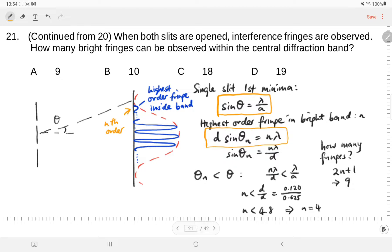So we come up with this inequality. We are saying that in order for you to see the nth order, it has to be not at or greater than, so it's less than the theta of the first order minima of the diffraction pattern. Combining these two in the inequality, we have this.